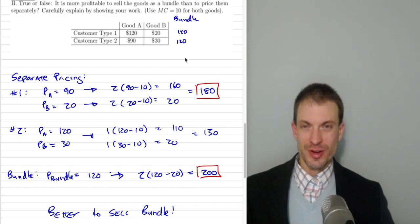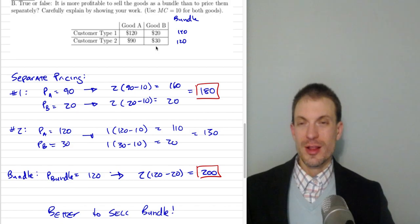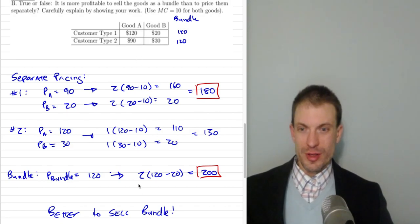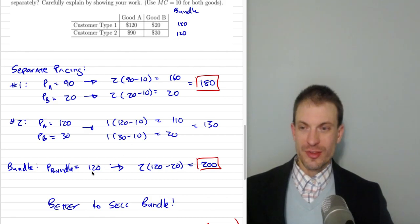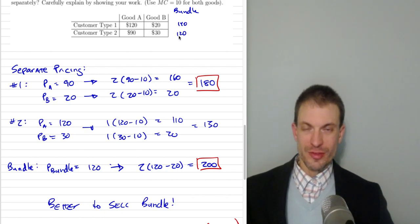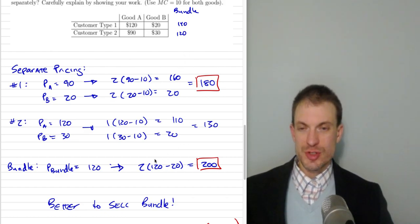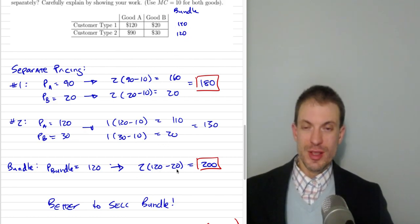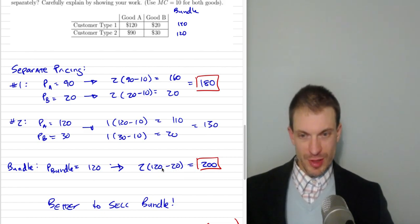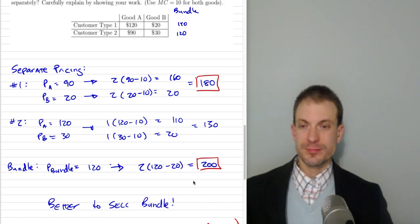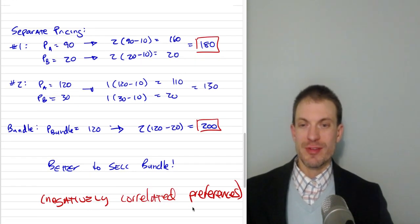If I set the bundle price at $120, that's exactly what I want to do. Both consumers will buy: consumer of type 1's willingness to pay matches exactly, and consumer of type 2 has $20 of consumer surplus. I sell two bundles at $120. The marginal cost is $10 for each good, so $20 per bundle. Profits are 2 × (120 − 20) = $200. It's better to sell the bundle here because we have negatively correlated preferences.